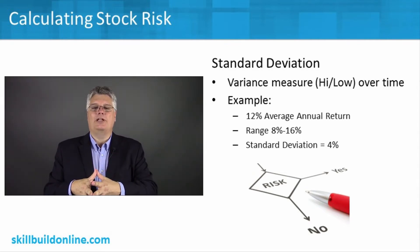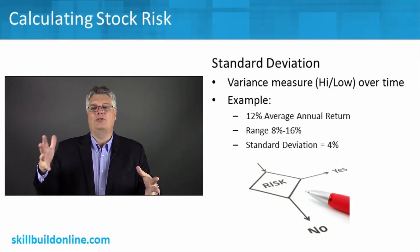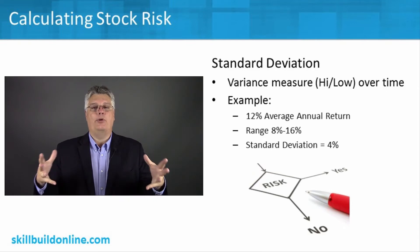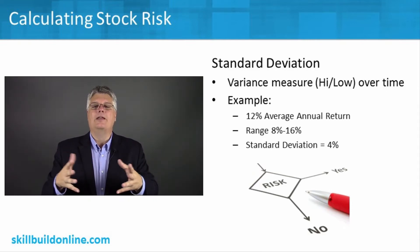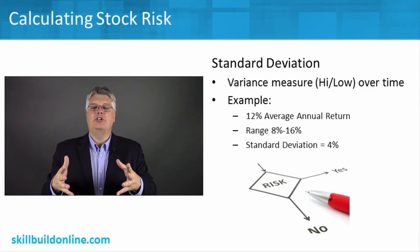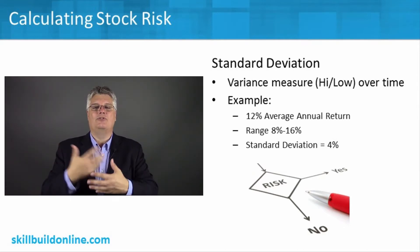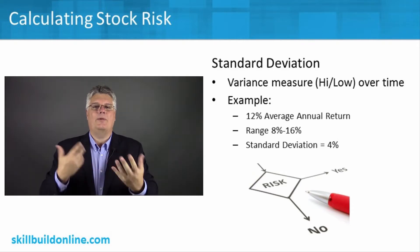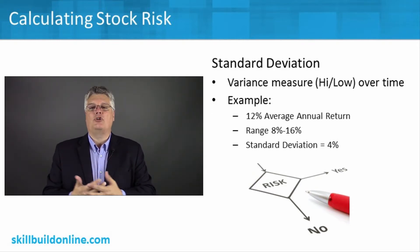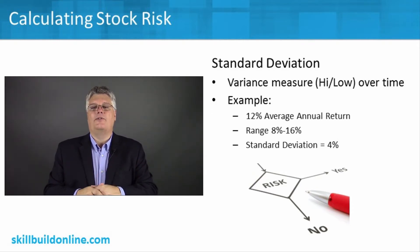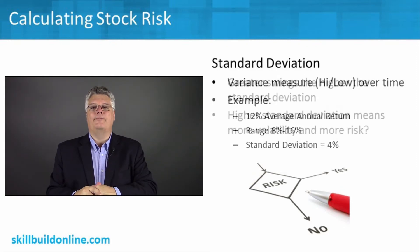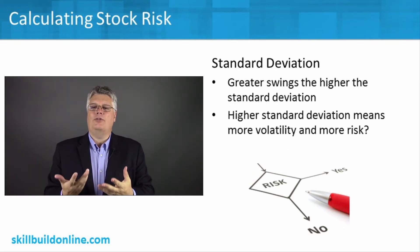If your average annual return is 12%, and your range over that period is some years 8% and some years 16%, that would be a standard deviation of 4% — 4% below and 4% high is your range and your deviation. So there's a quick way to think about returns of a fund: the greater the swings, the higher the standard deviation.